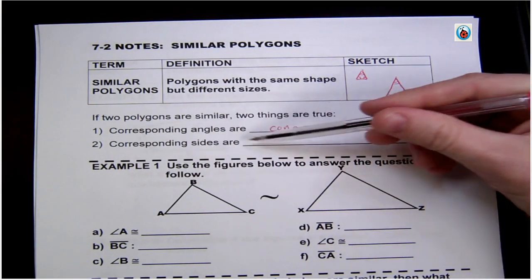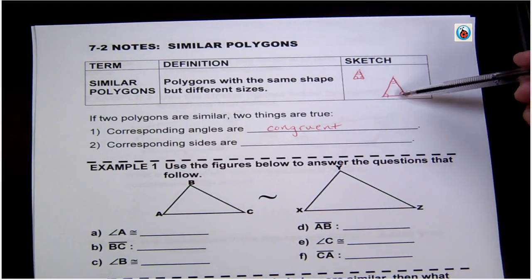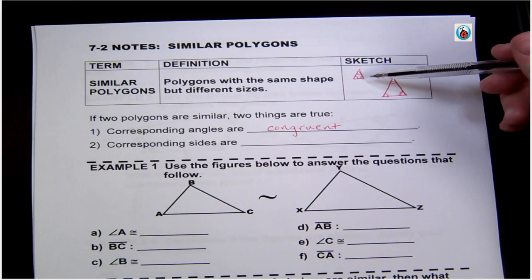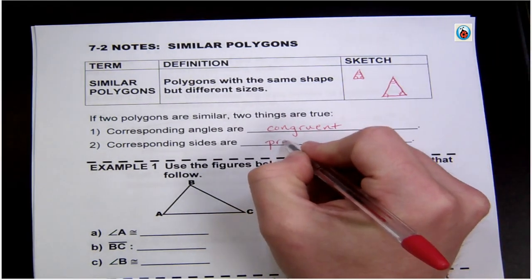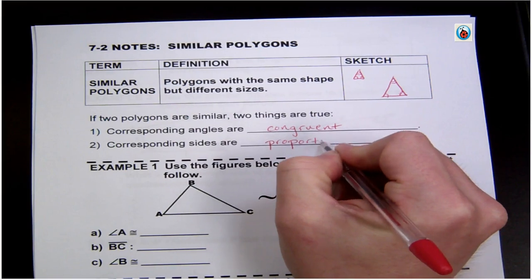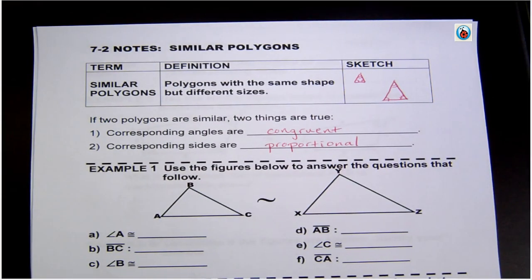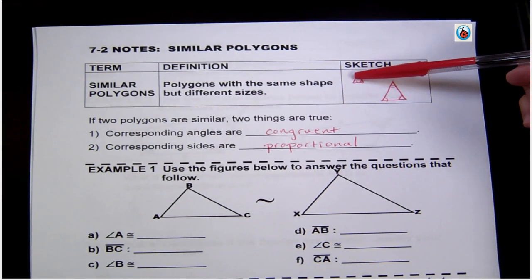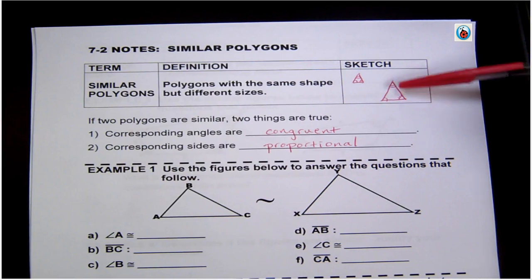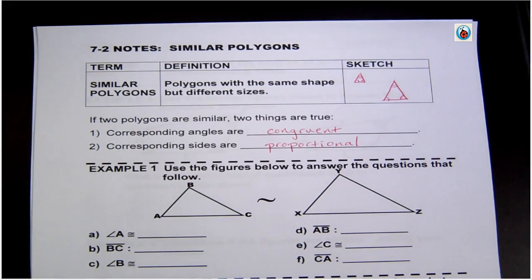Their sides aren't going to be the same — you can see that one side is much bigger than the other — but they are going to be proportional. That means they'll all have the same proportion. So if one side is two times bigger, then the other corresponding side is also going to be two times bigger.